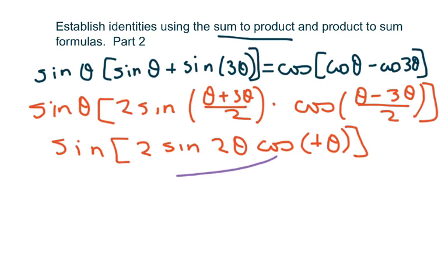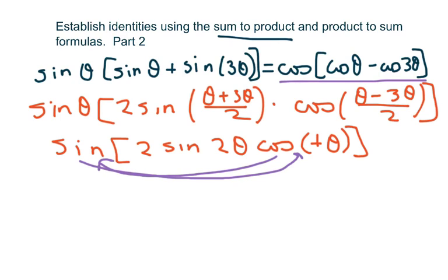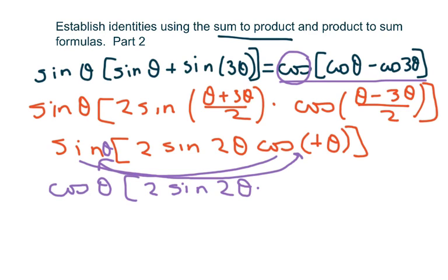I'm going to switch these two — bring cosine out and put the sine in here — because I want a cosine on the outside. So I'm going to bring out cosine of theta times 2 sine of 2 theta times sine of theta.